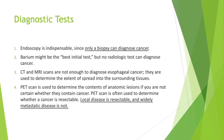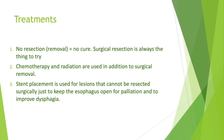In terms of diagnostic tests, endoscopy is the gold standard since only a biopsy can diagnose cancer. Barium swallow might be the best initial test, but no radiologic test can diagnose cancer. CT and MRI are not sufficient to diagnose cancer — they only determine the extent of spread into surrounding tissues. PET scan is used to determine the anatomy of the lesion and whether a cancer is resectable or not. Local disease is resectable; widely spread metastatic disease is not. Treatment options could be no resection or no cure at all, chemotherapy, chemotherapy plus radiotherapy in addition to surgery, or stent placement used only for palliative purposes to improve dysphagia symptoms.